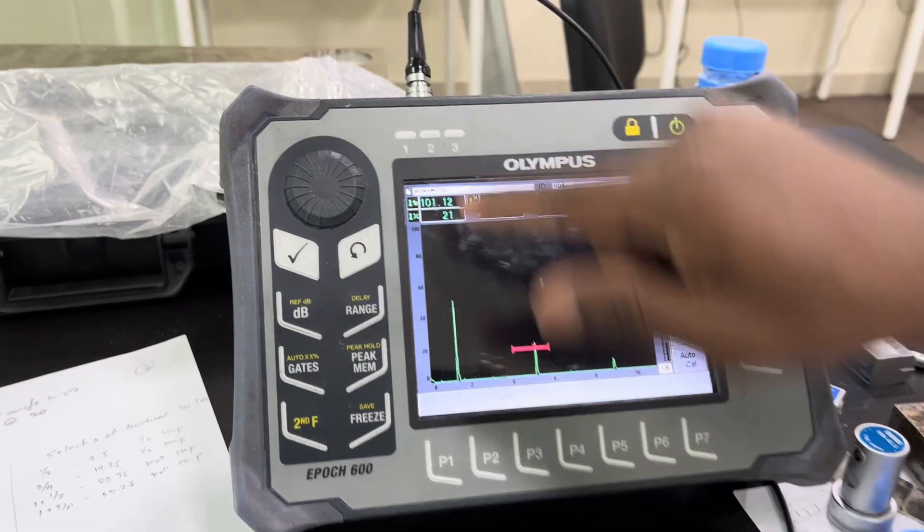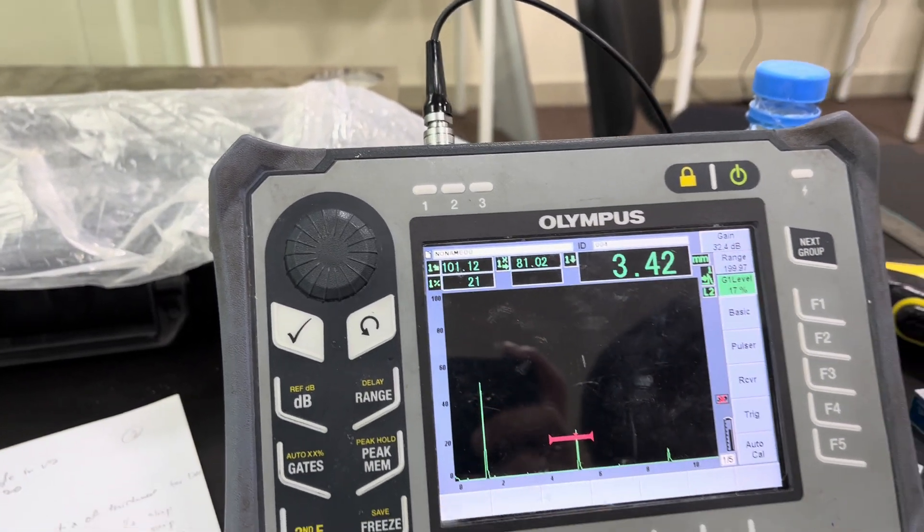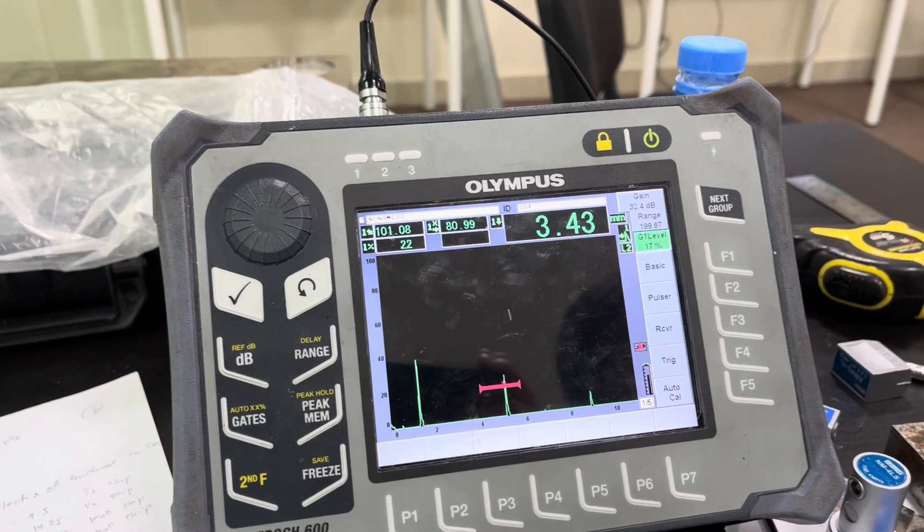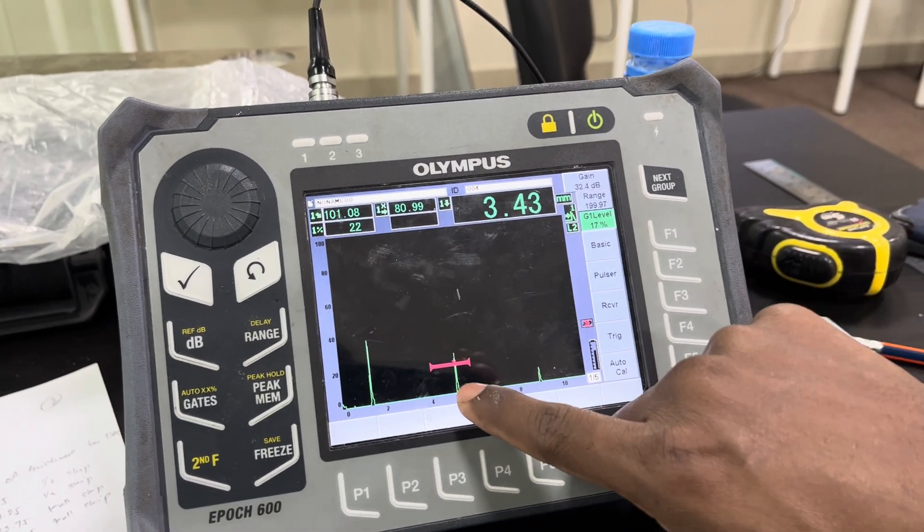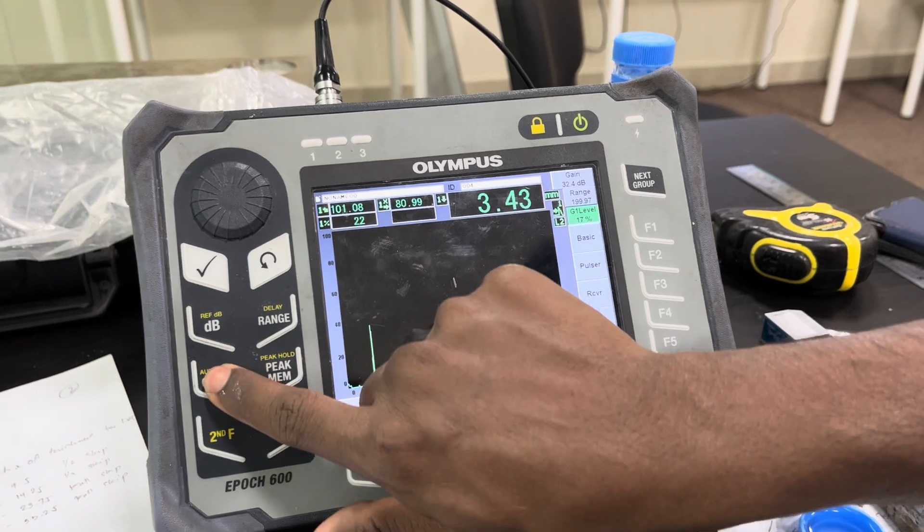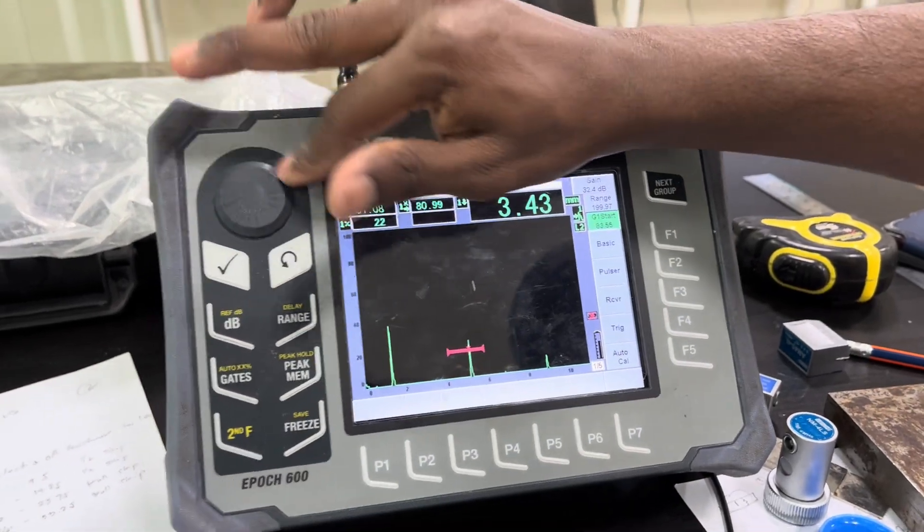See, now the second back wall echo is almost at 100. The third back wall echo should also come at 175, so I am going to check this gate.